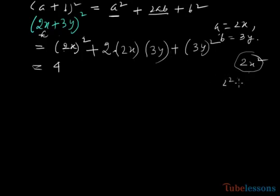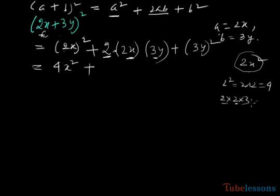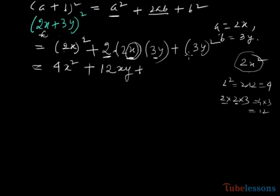(2x)² = 2×2 = 4, so 4x². Then 2×2×3 = 12, so 12xy. The last term is 3² = 9, so 9y². Therefore the expansion of (2x + 3y)² = 4x² + 12xy + 9y².